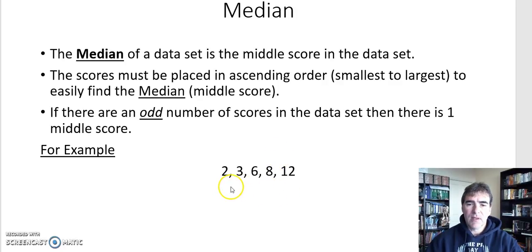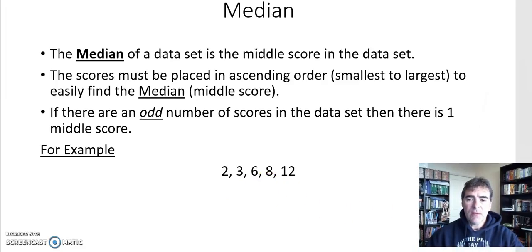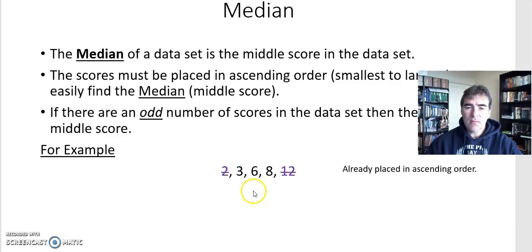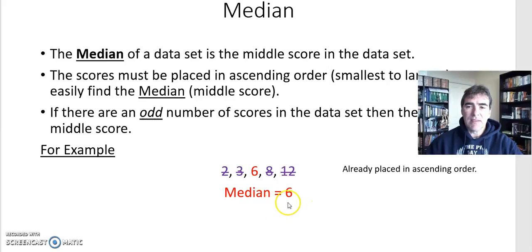Let's take a very small data set: the numbers 2, 3, 6, 8, and 12. You can see they're already placed in ascending order. We look at the smallest and largest — the 2 and the 12 — and we cross them out. We haven't found a middle score yet, so we repeat that process: find the next smallest and next largest and cross them out. Eventually we have our middle score, which is 6, and therefore our median is 6.